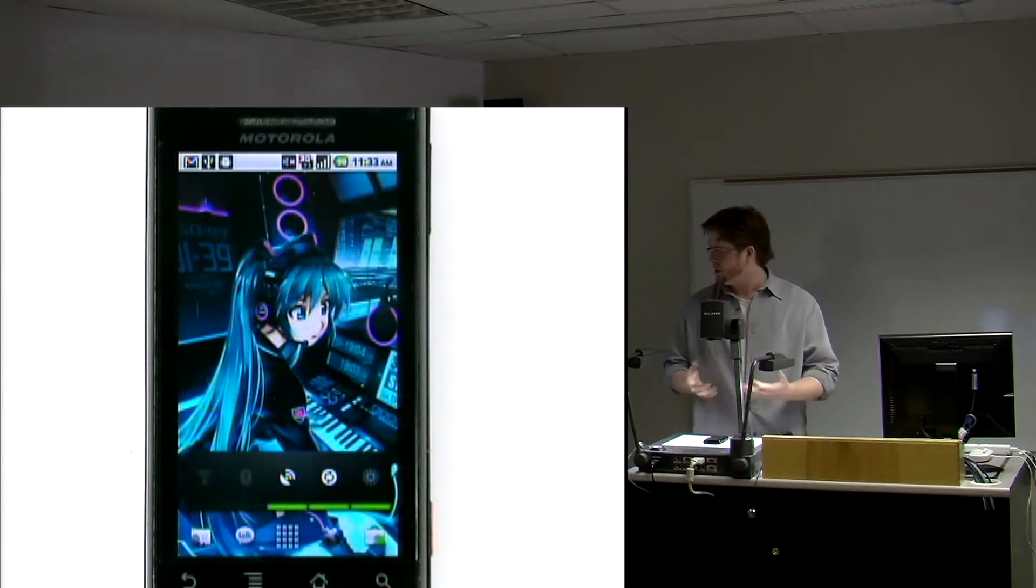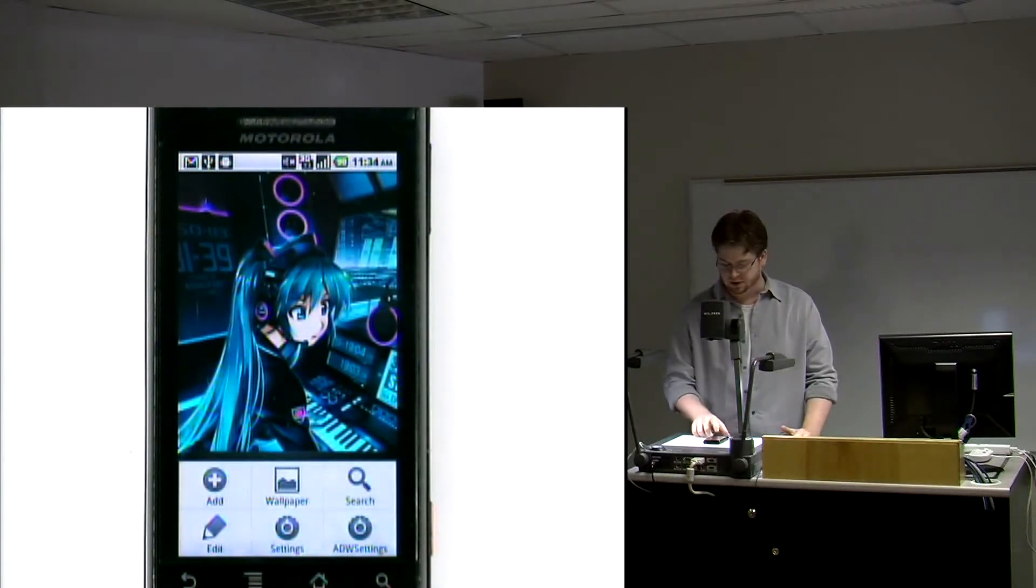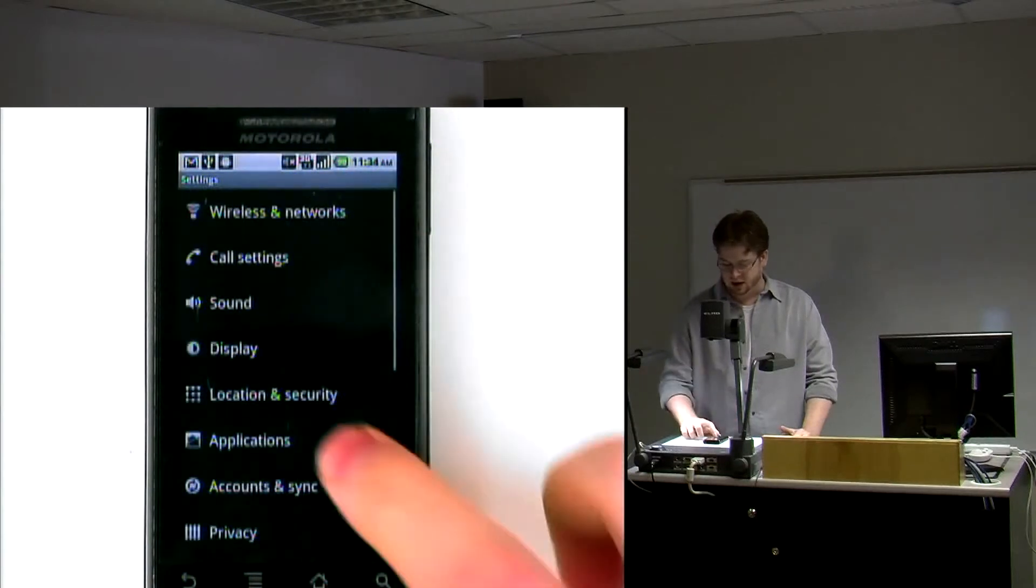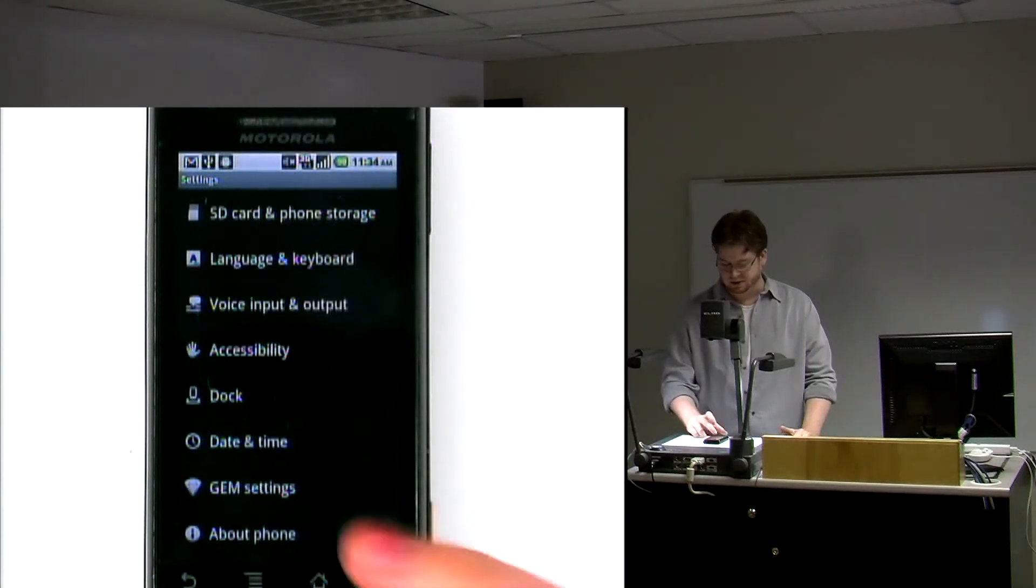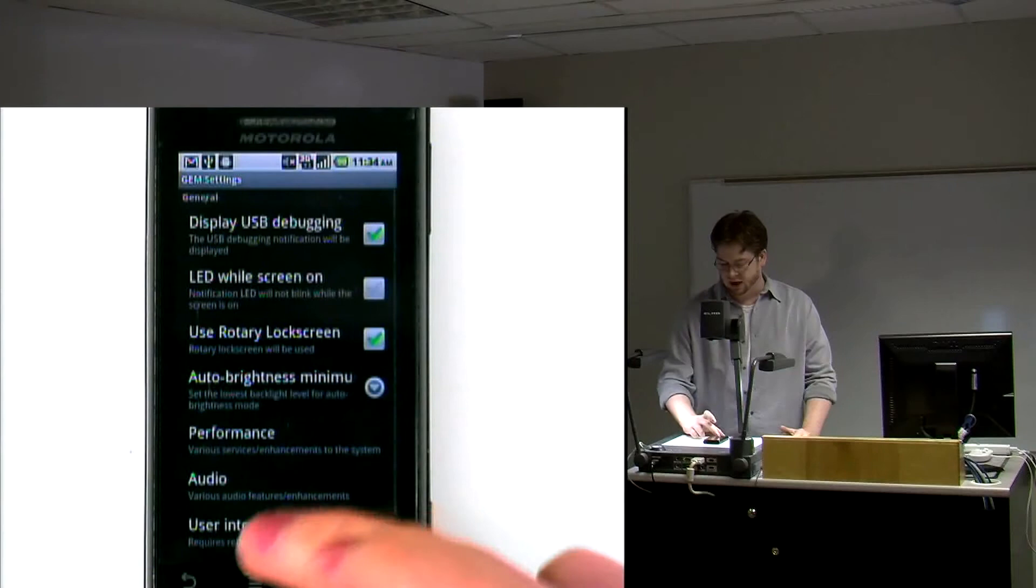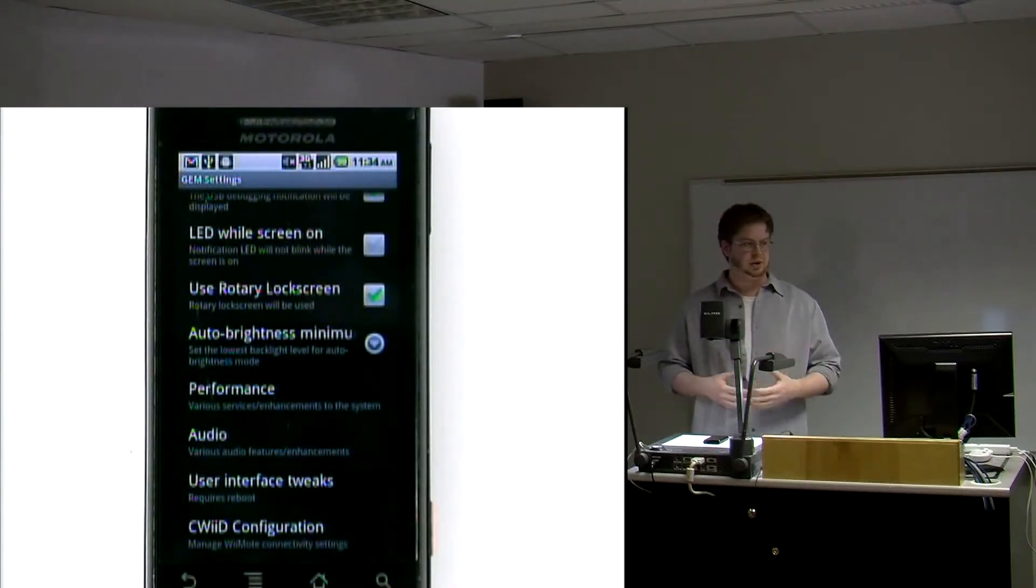So to actually get to the configuration utility, you go into settings, and this is where you go into a custom settings option down here, and this is where you would find it. We didn't really take into consideration the difficulty of finding the utility because we would expect people who would install the custom OS would read the information and how to get to it.